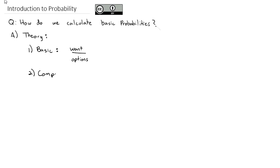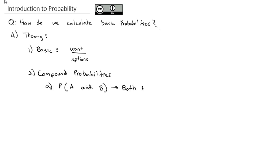We also have compound probabilities that are probably more useful in application. The first is when we want to calculate the probability that two things occur together — the probability of A and B. Maybe the probability that it's sunny outside and that it's a weekend; we want both of those things to happen at the same time. We calculate the probability of A and B by taking the probability of A times the probability of B given that A happened. The probability of B may be different or the same depending on whether A happened, but it's important that in our formula we multiply by B given that A happened.